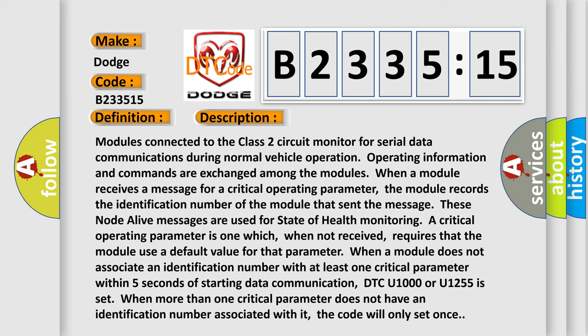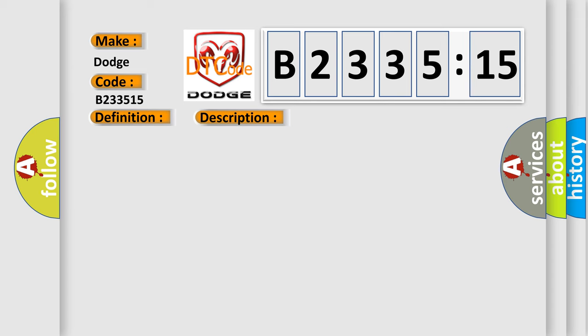A critical operating parameter is one which, when not received, requires that the module use a default value for that parameter. When a module does not associate an identification number with at least one critical parameter within five seconds of starting data communication, DTC U1000 or U1255 is set. When more than one critical parameter does not have an identification number associated with it, the code will only set once.